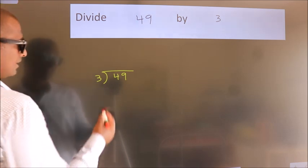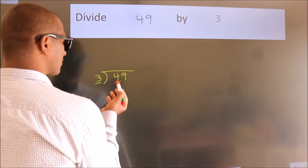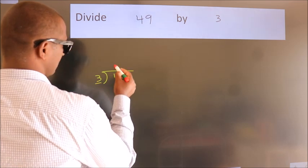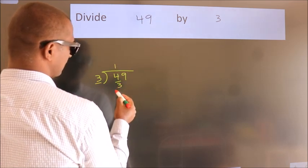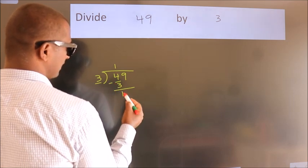Next, here we have 4. Here 3. A number close to 4 in the 3 table is 3 once 3. Now we should subtract. We get 1.